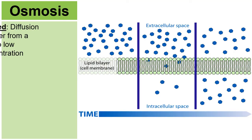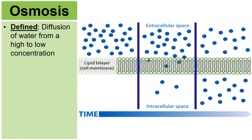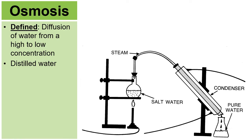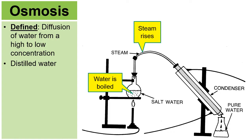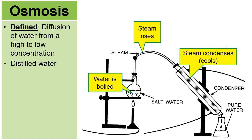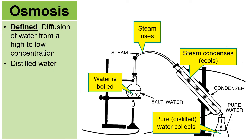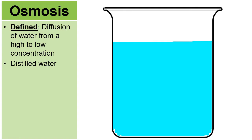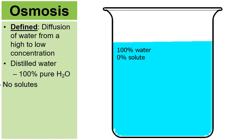Shifting focus — osmosis is the diffusion of water, specifically water from a high to low concentration. A distiller boils water into steam, which rises, cools, and condenses. The water collected at the end is pure distilled water — 100% pure water with no solutes. Any contaminants and impurities are left behind in the original boiling container.